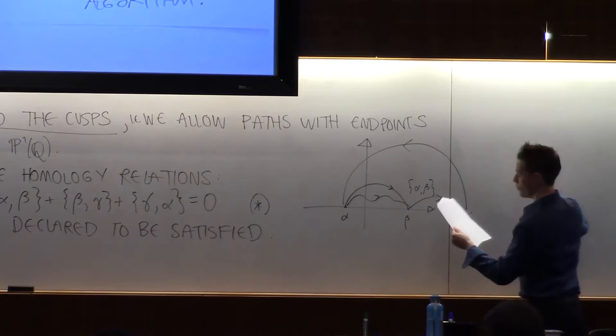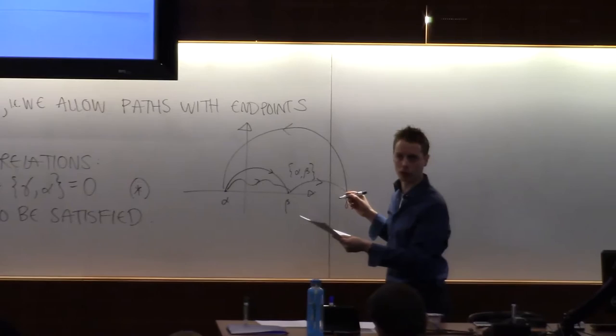So for those of you who are thinking abstractly, I'm now making some enormous group generated by the symbols alpha and beta, for alpha, beta in P1Q. And I declare the homology relation star to be satisfied, and that is the picture. I could go to gamma, and then I go back, and I declare that to be trivial in my group.